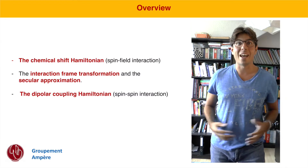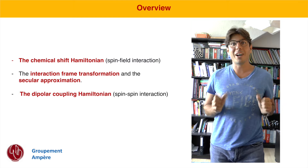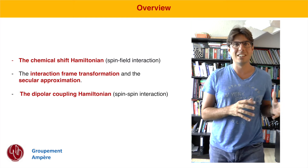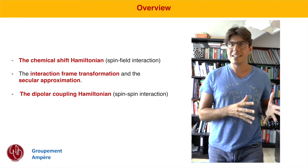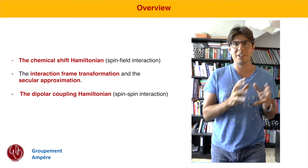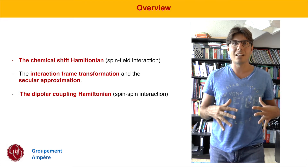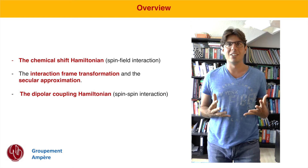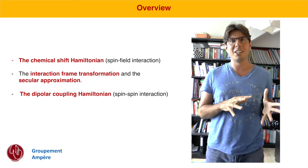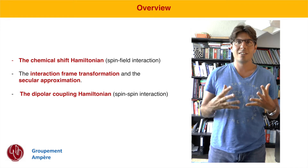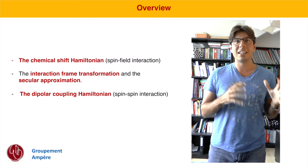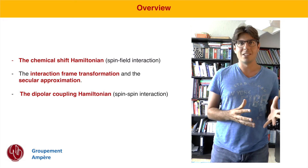Hello NMR community and welcome back. We are on our journey discovering the theoretical treatment of Hamiltonians under magic angle spinning. Last time we discussed general expressions for spin-field and spin-spin interactions and the Zeeman Hamiltonian. This time we want to learn about two more types of Hamiltonians very often used in solid-state NMR: the chemical shift Hamiltonian, the chemical shift anisotropy, and the dipolar Hamiltonian.